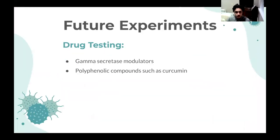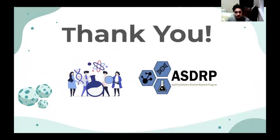In the future, we're planning on testing gamma secretase modulators, as well as polyphenolic compounds such as curcumin on amyloid beta aggregation in our C. elegans. We'd like to thank our advisor, Ms. Truong, and ANS-DRP.